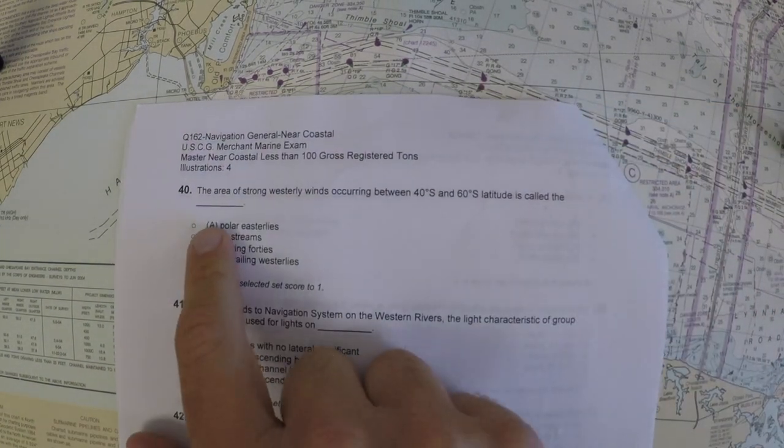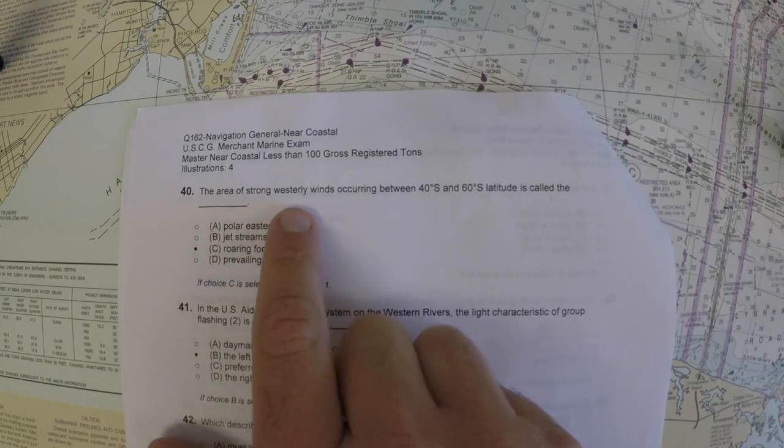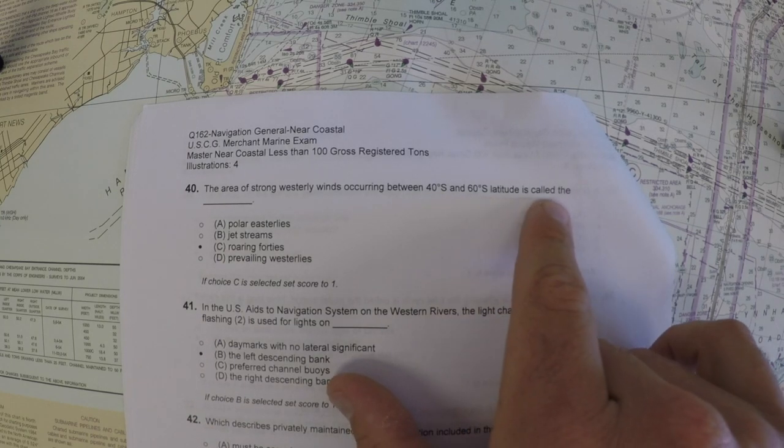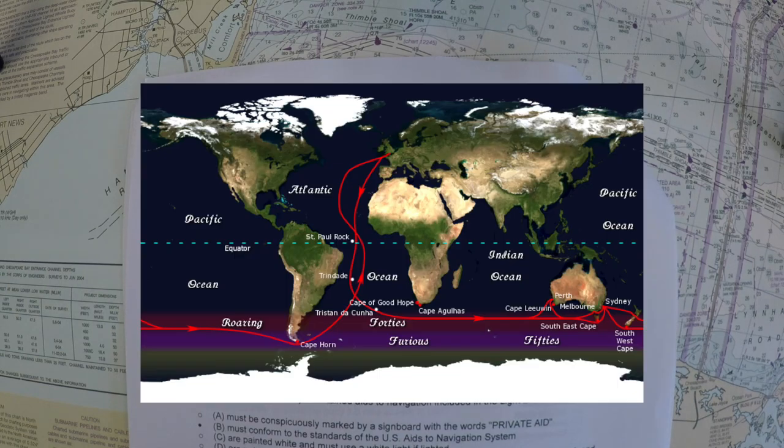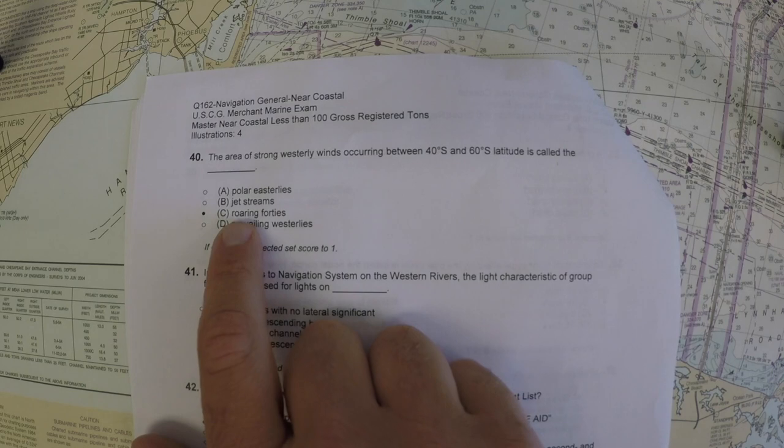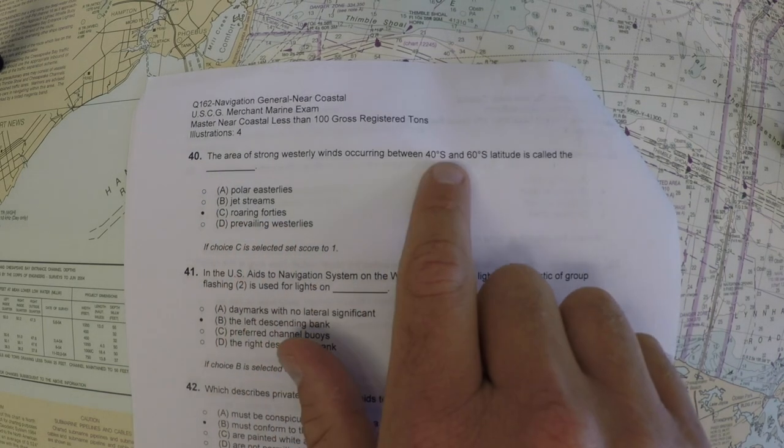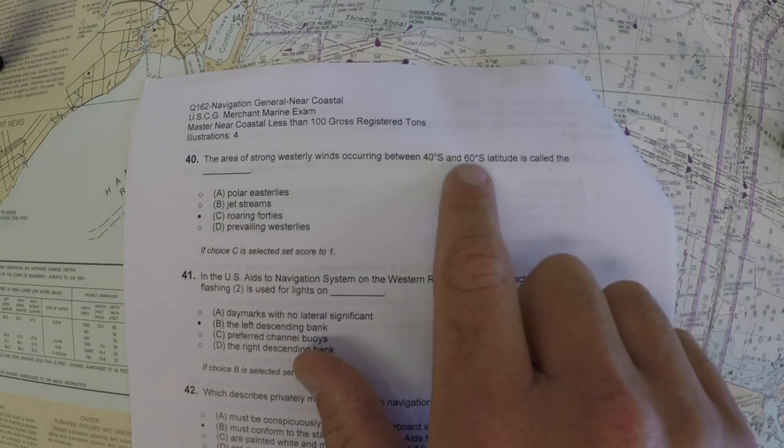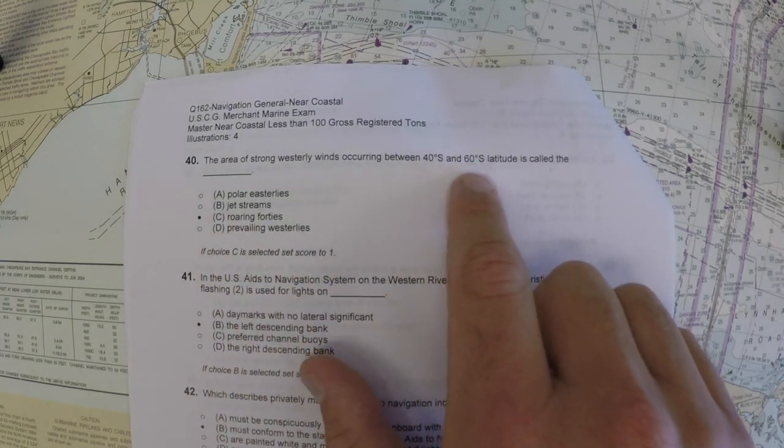We're tearing through this one. These are all trivia questions. Number 40: the area of strong westerly winds occurring between 40 degrees south and 60 degrees south latitude is called what? This is a colloquial term for it. If you look at a picture of the earth between 40 and 60, there's not much land in the way. So the winds just continually blow in that region, making strong winds and strong seas. The nickname for them is the roaring 40s. You can remember because it's near 40 degrees south.